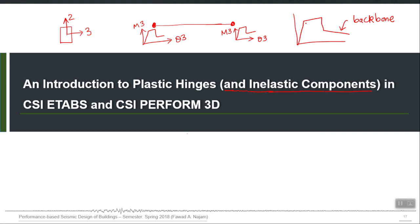Another cyclic or hysteretic behavior is called flag-shape behavior — it looks like a flag in both directions. Certain elements can follow this behavior, such as certain precast elements and rocking shear walls.